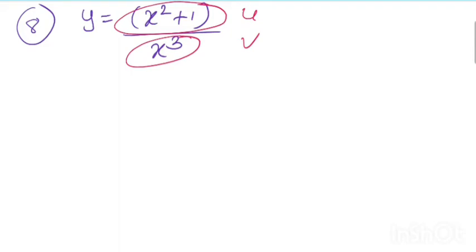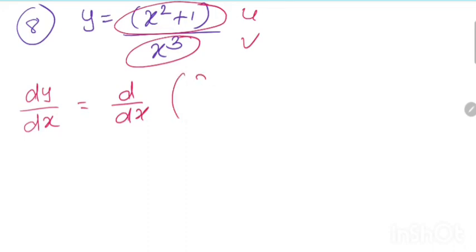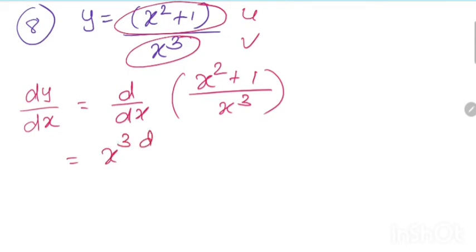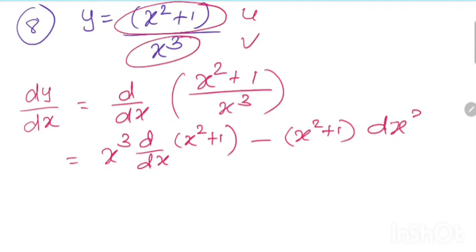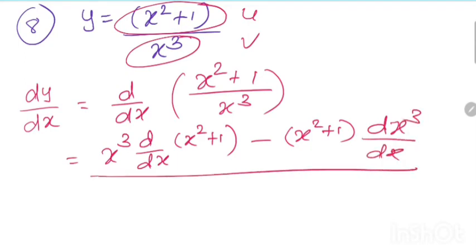To find the solution, write dy by dx equals d by dx of x square plus 1 divided by x cube. We write x cube times derivative of x square plus 1, minus x square plus 1 times derivative of x cube, all divided by x cube squared.